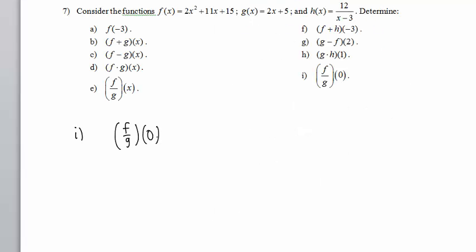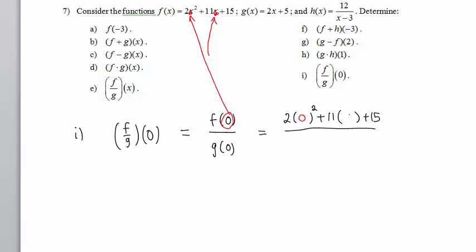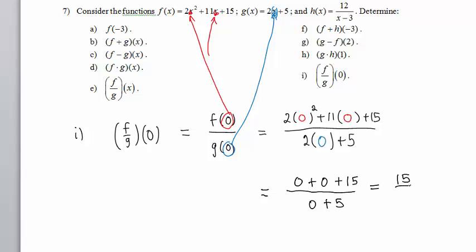In part I, we have F divided by G of 0. This means F of 0 divided by G of 0. F of 0, we take the value 0 and put it in for X in the F formula. G of 0, we take 0 and put it into the formula for G where we see an X. In the numerator we have 0, plus 0, plus 15. In the denominator, 0 plus 5. 15 divided by 5 equals 3, our answer.